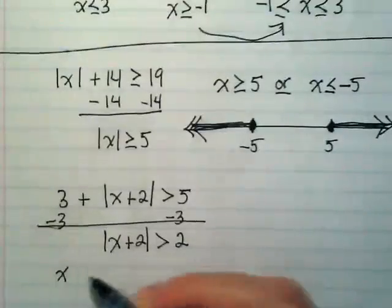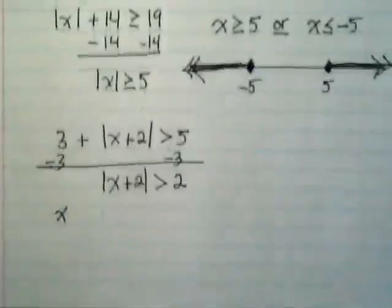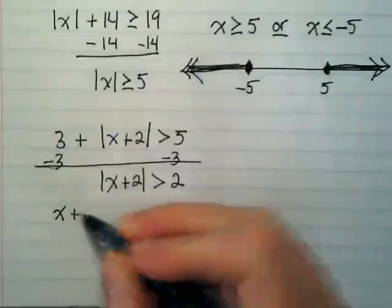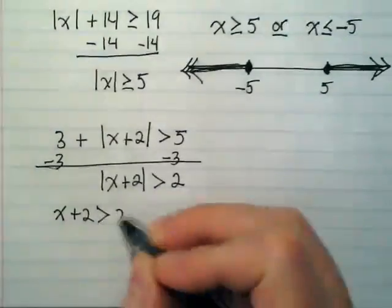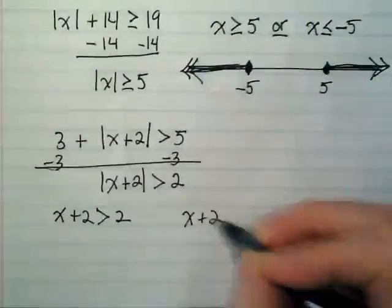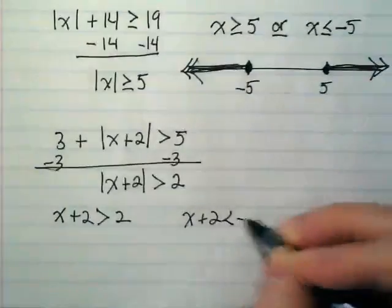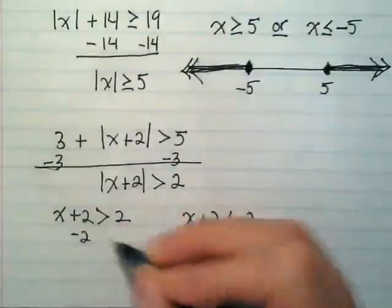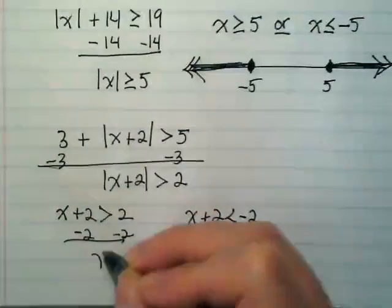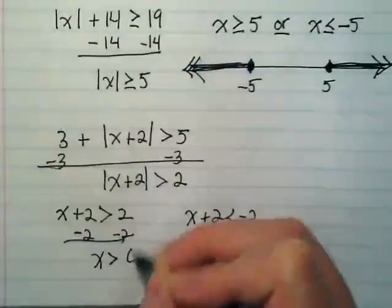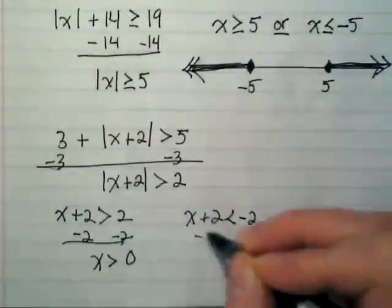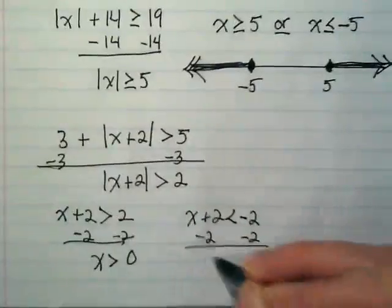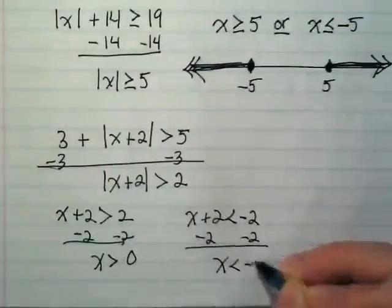I'm going to do a positive version and a negative version. x plus 2 is greater than 2, and x plus 2 is less than negative 2. You'll subtract the 2 and I get x is greater than 0. Subtract the 2 and I get x is less than negative 4.